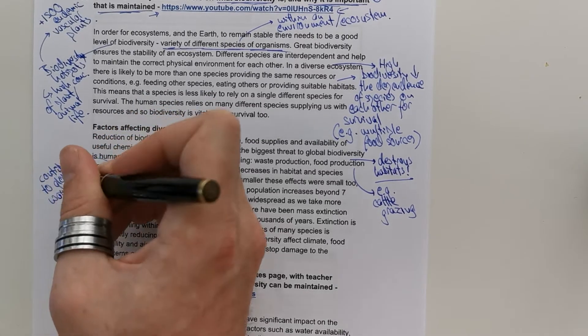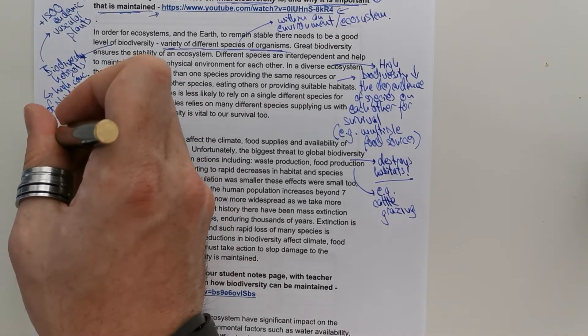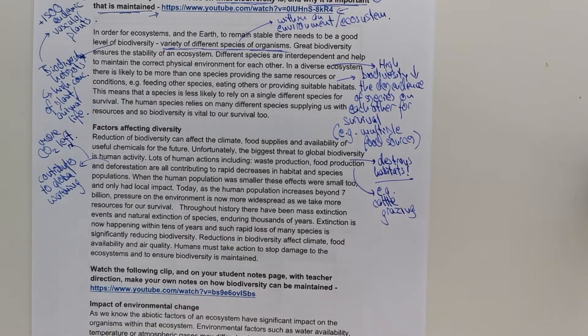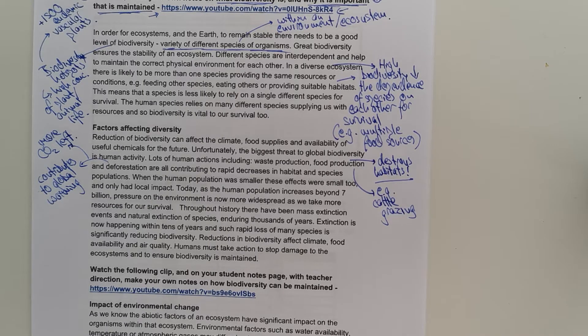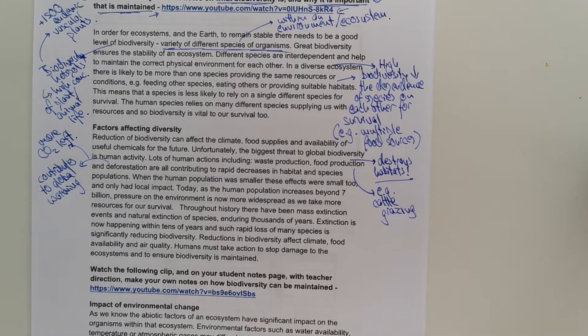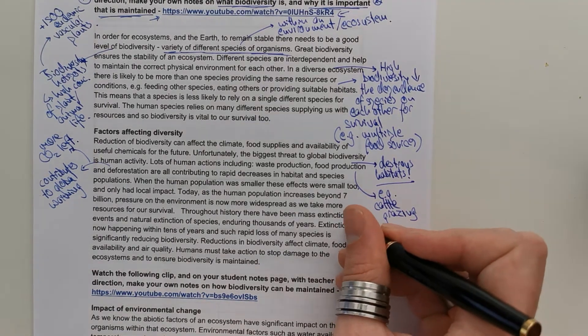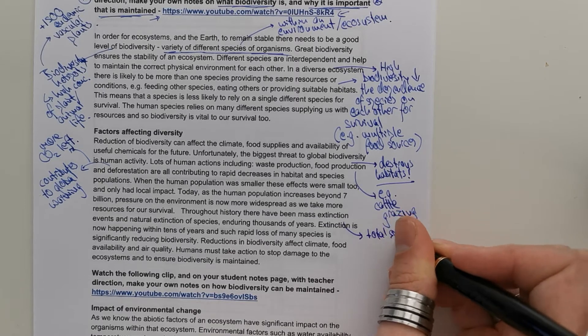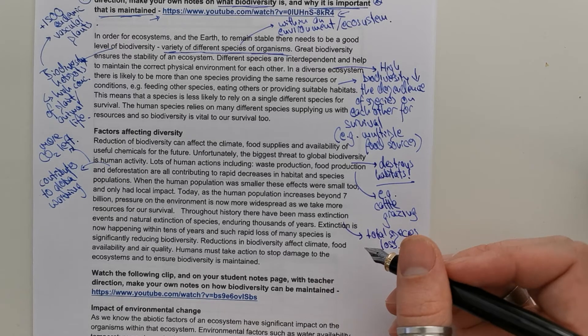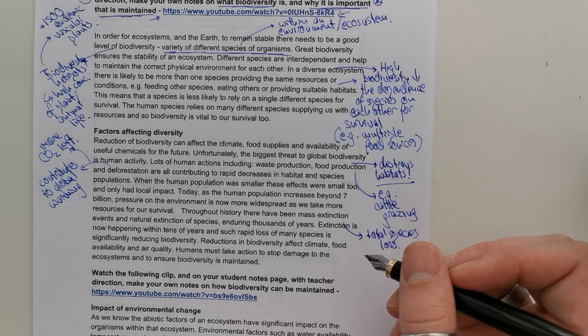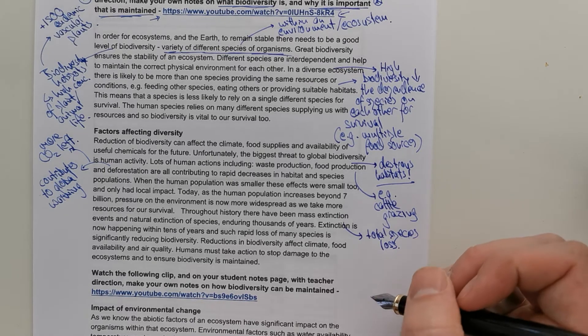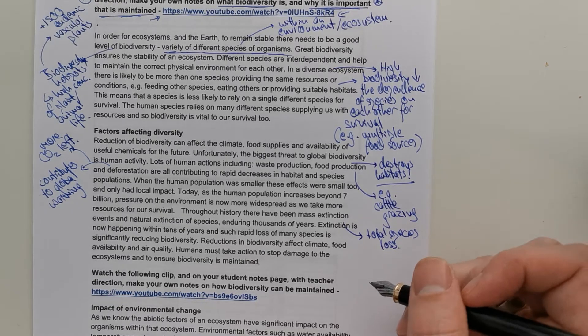And then, as we've talked about before, the chopping down of trees and habitats for things like this contributes to global warming and climate change. Because there is more CO2 left in the atmosphere. Because there are less trees and plants to take it in. Now, when the human population was smaller, these effects were small too and only had a local impact. Today, as the human population increases beyond 7 billion, pressure on the environment is now more widespread than ever. As we take more resources for survival throughout history, there has been mass extinction events and natural extinction of species, enduring thousands of years. Now, remember, what does this term mean? Extinction, total species loss. Now, extinction is now happening within tens of years and such rapid loss of species is significantly reducing biodiversity. Reductions in biodiversity affect climate, as we've said, food availability and air quality. Humans must take actions to stop damage to the ecosystems, ensure biodiversity is maintained.